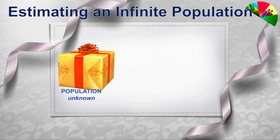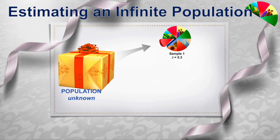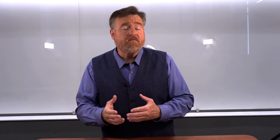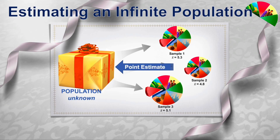Here we have a population, but it's hidden away from us, wrapped up in a way that we can't know anything about it — all of the parameters are unknown. How could we learn something about this population? We could start by doing random samples. We select one sample and determine that the mean is 5.3; a second sample yields a mean of 4.8; a third sample gives us a mean of 5.1. We shouldn't pick just one — instead we should take each individual mean, average them, and the average of those means will be the best point estimator for the population.